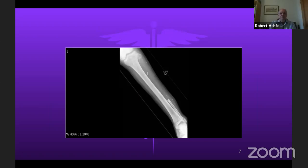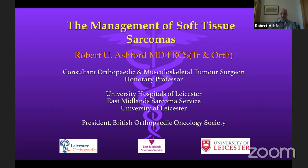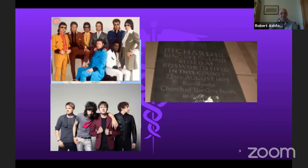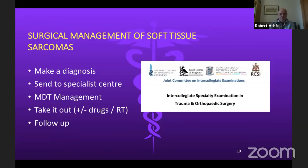Those are examples of when you might meet soft tissue sarcomas in your exam. For the exam, this is what you need to know: make a diagnosis, send the patient to a specialist centre, manage through an MDT, resect the tumor, consider drugs or radiotherapy, and follow up. If you stick to those principles you will pretty much cover soft tissue sarcomas for the exam. In 2006, NICE published the Improving Outcomes for People with Sarcoma manual, and in 2015 they issued quality standards as an evolution of that document.